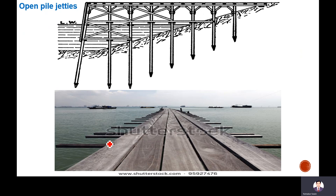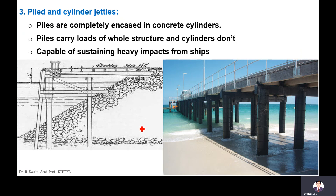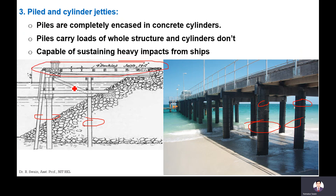Open pile jetties have no intermediate support — support is only at the ends. The ships take berth here. In pile and cylinder jetties, piles are completely encased in concrete cylinders. These cylindrical columns take the heavy impact of the ship.